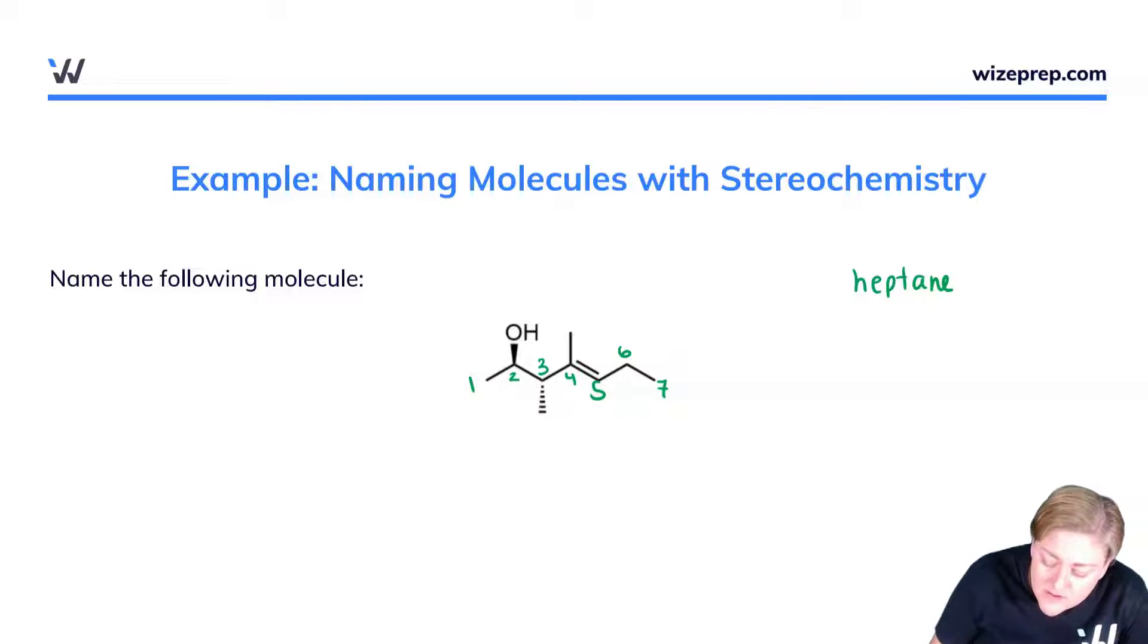We also note that we have an important functional group. That important functional group here is the alcohol. So we know that we're going to have an 'ol' somewhere in this name. We now need to deal with the fact that we have a whole lot of functional groups and we have some stereochemistry.